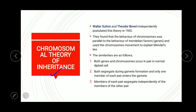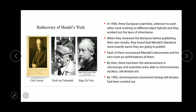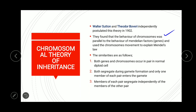Regarding the chromosomal theory of inheritance: Walter Sutton and Theodore Boveri independently postulated the theory of inheritance in 1902. They found that the behavior of chromosomes was parallel to the behavior of Mendelian factors or genes. They used chromosome movement to explain Mendel's laws. Let us look at the postulated similarities between chromosomes and factors.